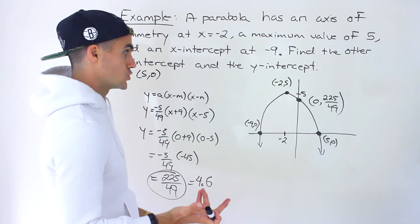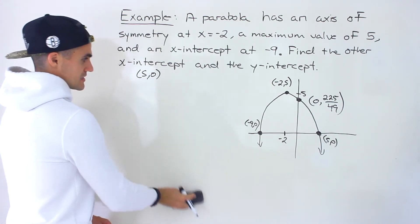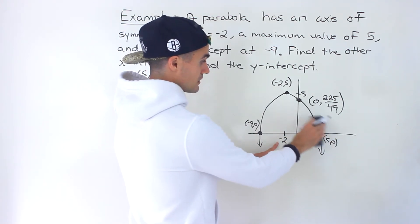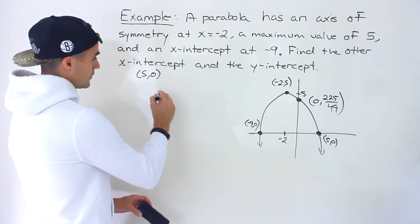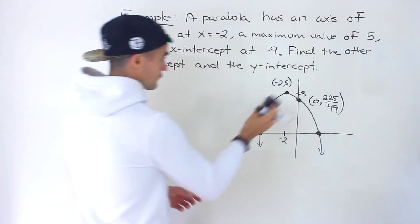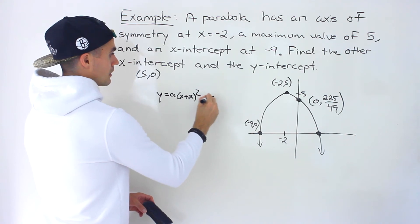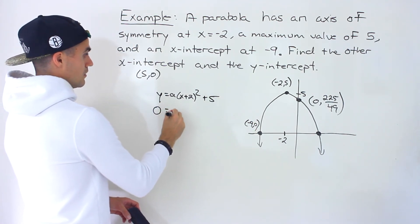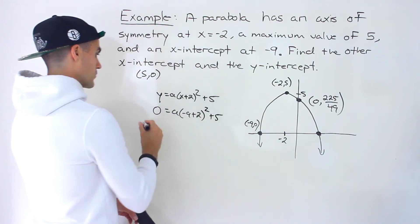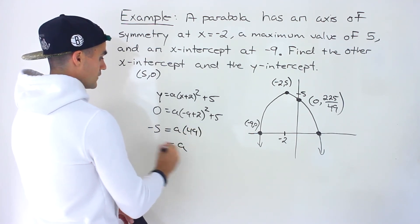There are actually multiple ways to go about this question. Let's say we didn't find the other x-intercept using the symmetry spacing. What you could have done with the information given is create a vertex form equation, then plug in negative 9 and 0 to solve for the a value. Negative 9 plus 2 is negative 7; negative 7 squared is 49. So we get that same a value of negative 5 over 49.